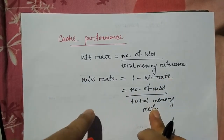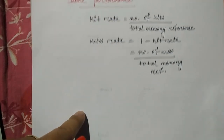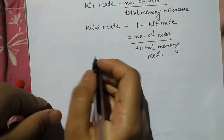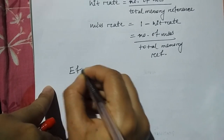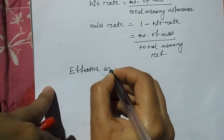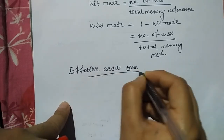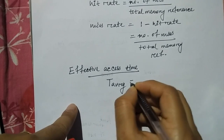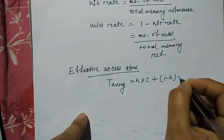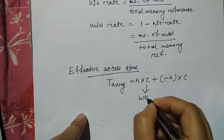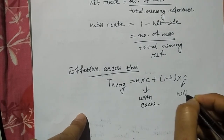After that, for cache and memory average access time, the effective access time of cache uses a formula: hit rate multiplied by cache access time, plus one minus hit rate multiplied by main memory access time. This formula is with cache, and this is without cache.